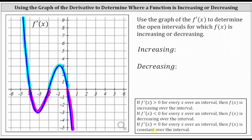Working our way from left to right along the x-axis — to the right we approach positive infinity, to the left negative infinity — when x is less than negative four, the first derivative is positive. When x is between negative four and negative two, the first derivative is negative. When x is between negative two and zero, the first derivative is positive. And when x is greater than zero, the first derivative is negative.